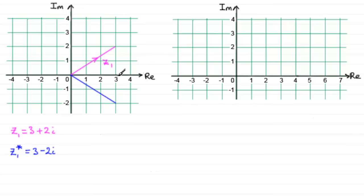Don't forget the arrow. And this would be the complex conjugate of Z1. And do you notice how it's related to Z1? It's a reflection in the real axis.